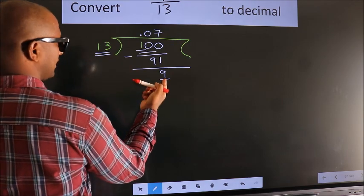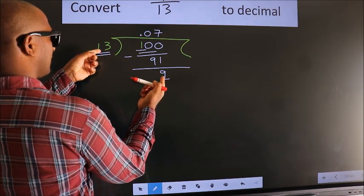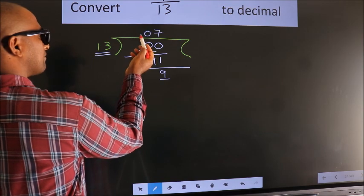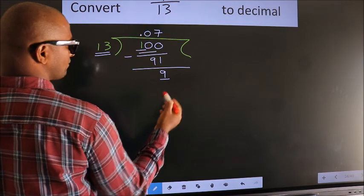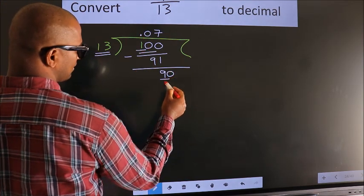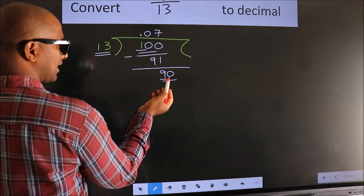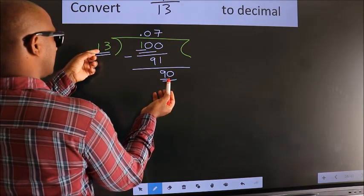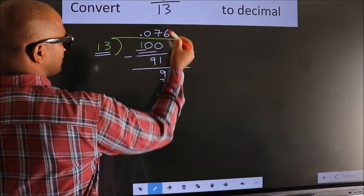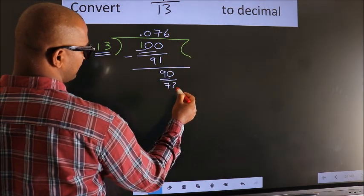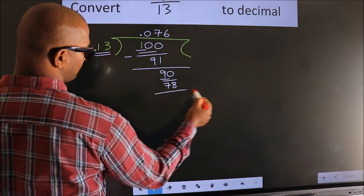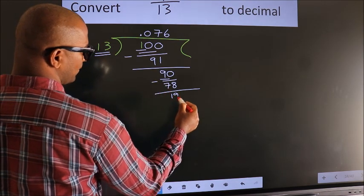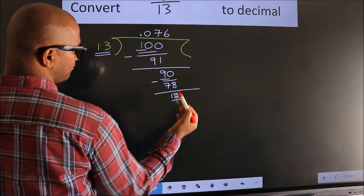We have 9 here. 9 is smaller than 13, and we already have the decimal so we can directly bring a 0 — so 90. A number close to 90 in the 13 times table is 13×6=78. Now we subtract and we get remainder 12.